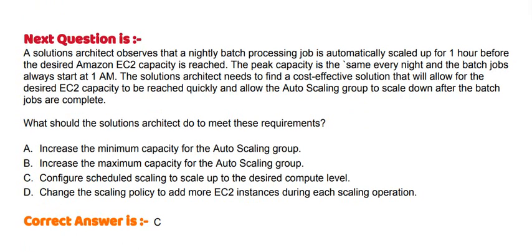A solutions architect observes that a nightly batch processing job is automatically scaled up for one hour before the desired Amazon EC2 capacity is reached. The peak capacity is the same every night and the batch jobs always start at 1 AM. The solutions architect needs to find a cost-effective solution that will allow the desired EC2 capacity to be reached quickly and allow the auto-scaling group to scale down after the batch jobs are complete. What should the solutions architect do to meet these requirements?